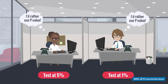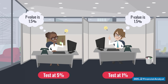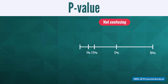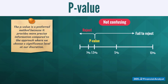The p-value is the smallest level of significance at which we are able to reject the null hypothesis. In our example with the two researchers, the p-value could be 1.5%. So any test that has a significance level of 1.5% or below would reject H0, while tests with a significance level above 1.5% would fail to reject H0.